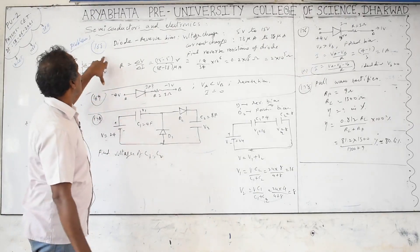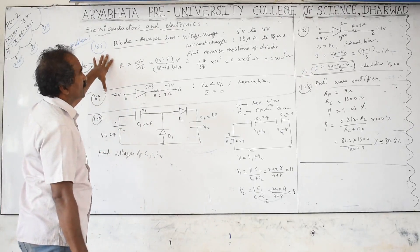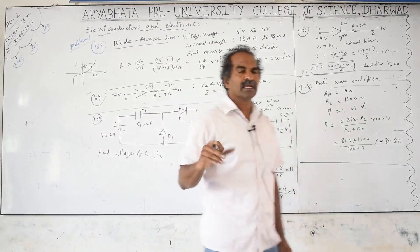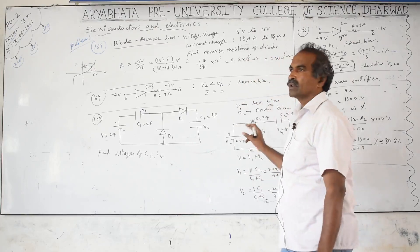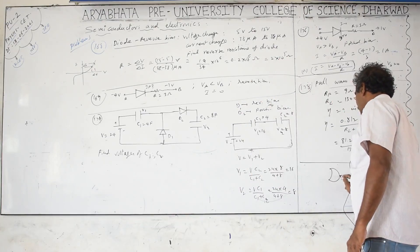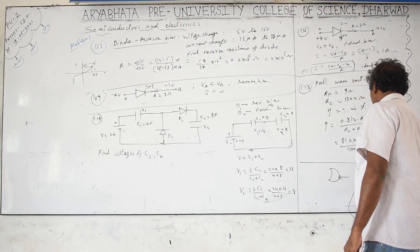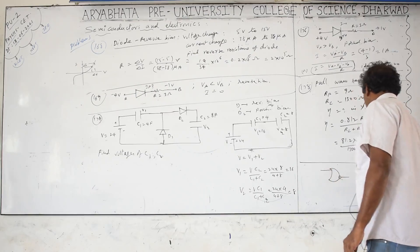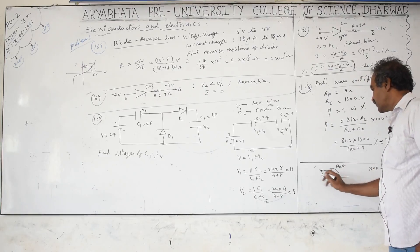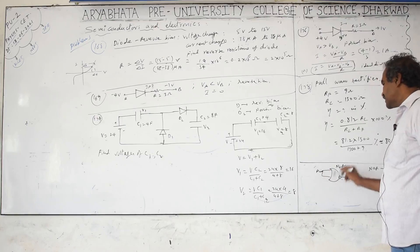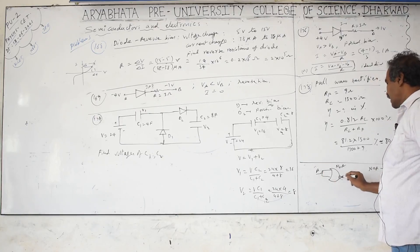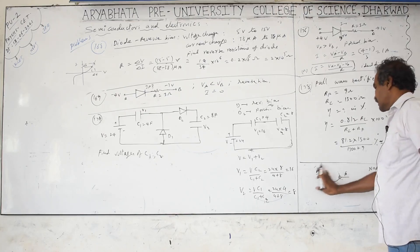Gate conversion problems are required for NEET and JEE. For example, to convert a NOR gate into a NOT gate: since NOR has two inputs but NOT has one, connect both inputs together (A+A = A, so NOR becomes NOT). Similarly for NAND: connect both inputs together. Gate conversion diagrams — NOR to NOT, NOR to AND, NAND to NOT, NAND to OR — are given in the notes.